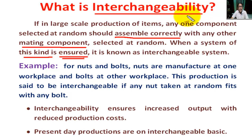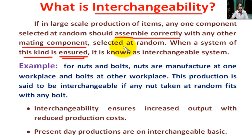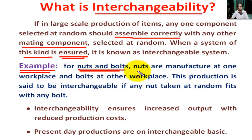Interchangeability may be defined as that property of manufacture in which any male member taken at random from a batch of production fits with any other female member in production without any fitting or adjustment. For example, for nut and bolt — nut manufactured at one workplace, bolt at another workplace.